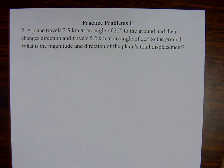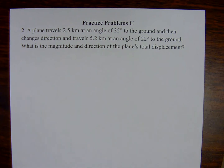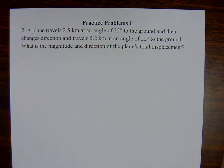Practice problem number three, associated with sample problem C. A plane travels 2.5 kilometers at an angle of 35 degrees to the ground, then changes direction and travels 5.2 kilometers at an angle of 22 degrees to the ground. What is the magnitude and direction of the plane's total displacement?